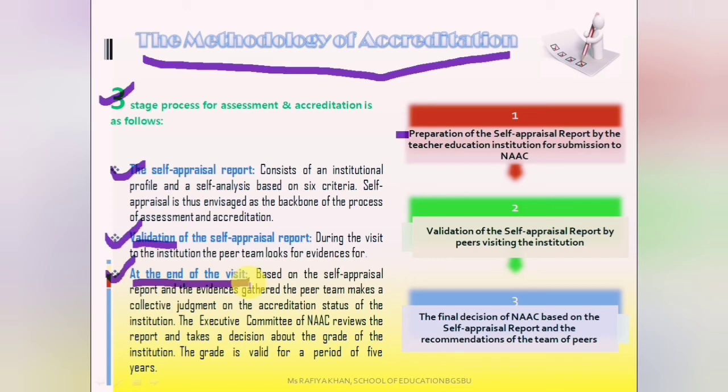The grade can be B, B+, A, or A+. This depends on how well the institution performed in terms of quality and excellence. If the grade is good, it indicates that the institution's teaching quality and overall excellence is high. However, this grade is not permanent — because if the grade were given forever, there would be no scope for improvement.